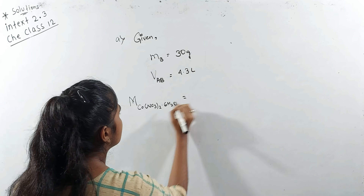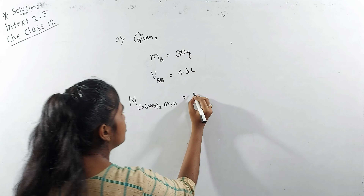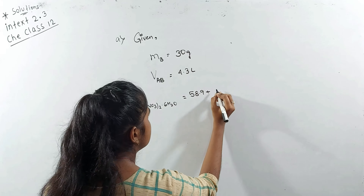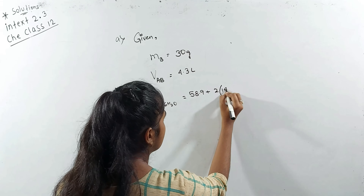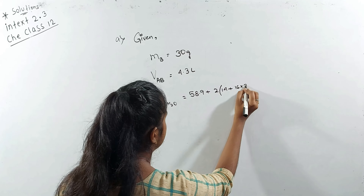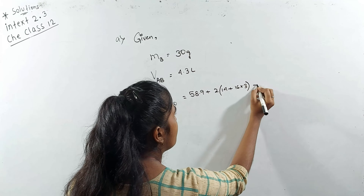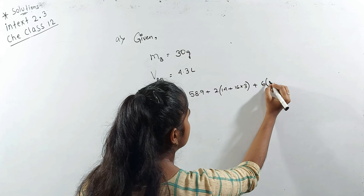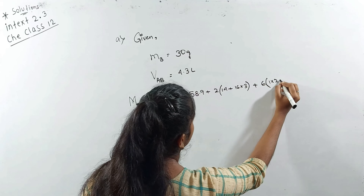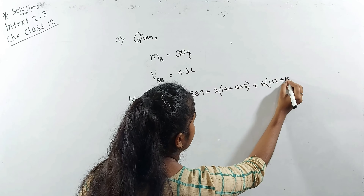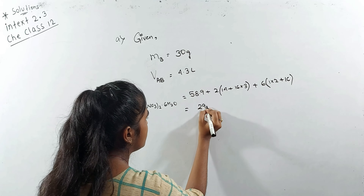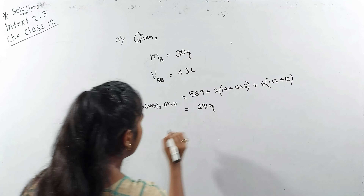So we have to find the molarity. First of all, what is given? The mass of the solute — Co(NO₃)₂·6H₂O — is 30 grams. After that, we have the volume of solution, which is 4.3 L.